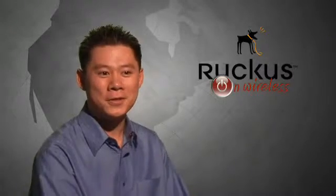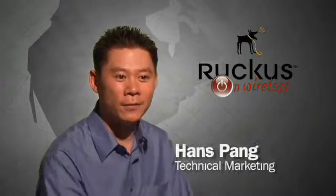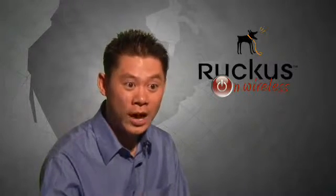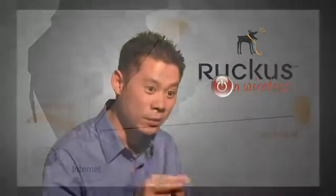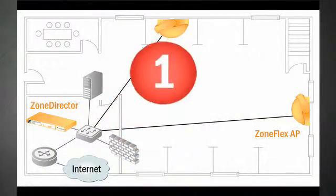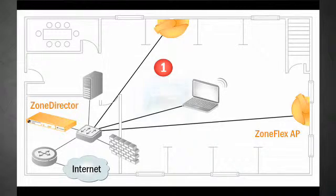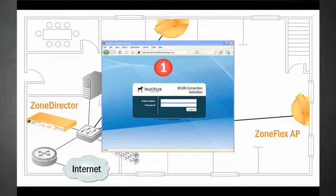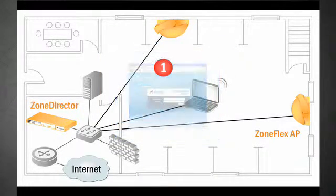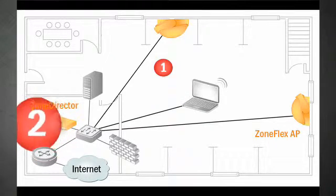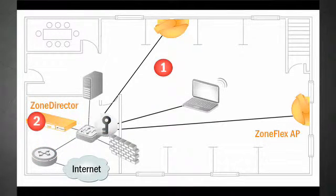The first step is the user connects their device either wired via Ethernet or to an open SSID on the network. At that point they go to a captive portal where they type in their username and password. The Zone Director authenticates that information against a RADIUS server, Active Directory, LDAP, or local database.